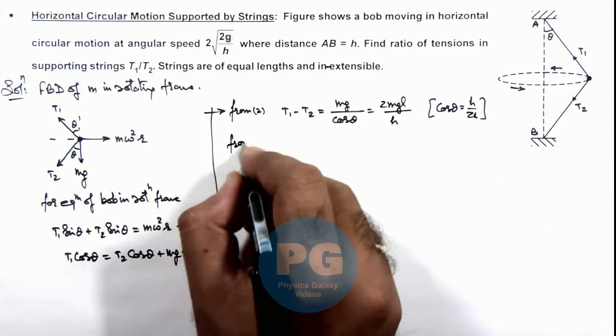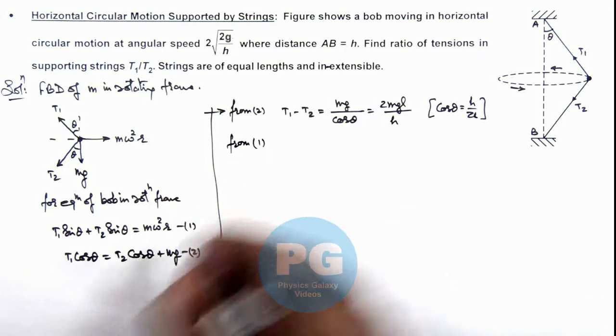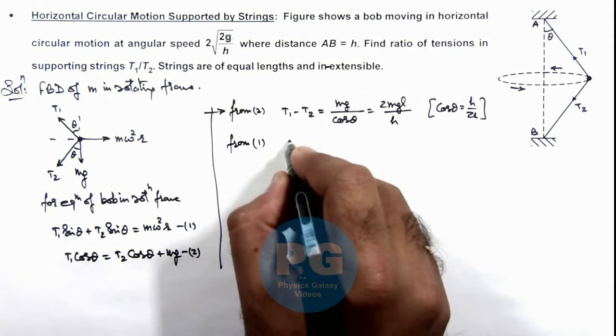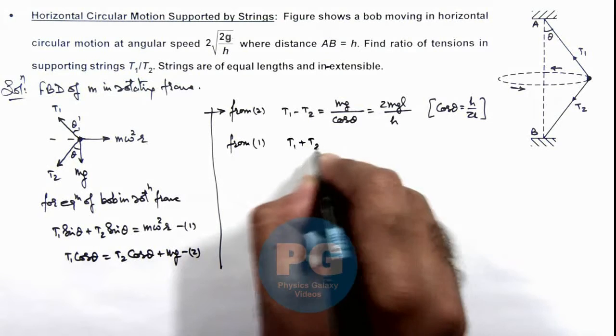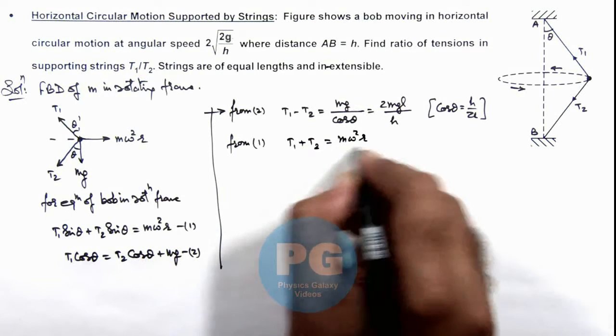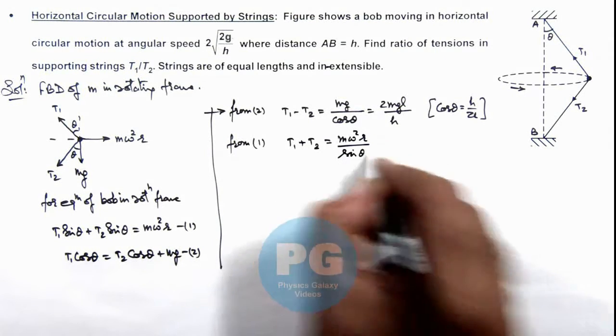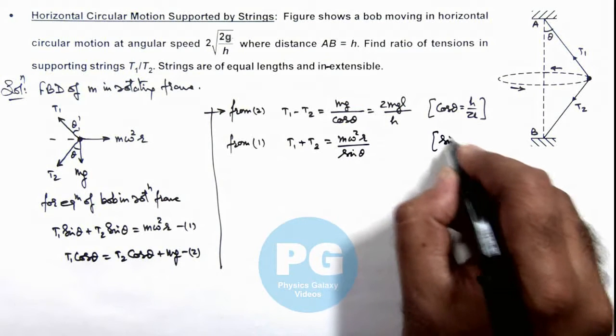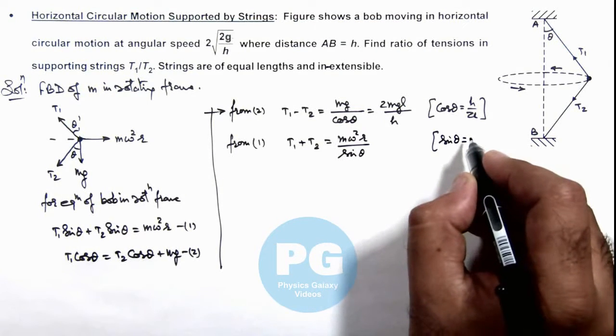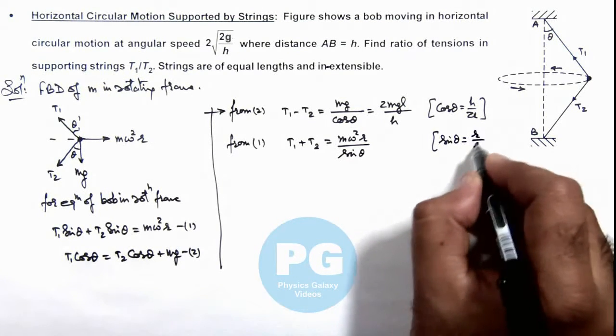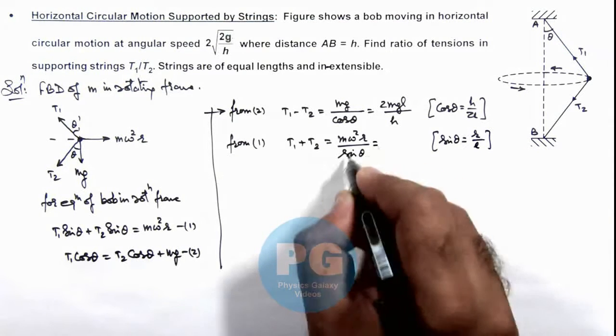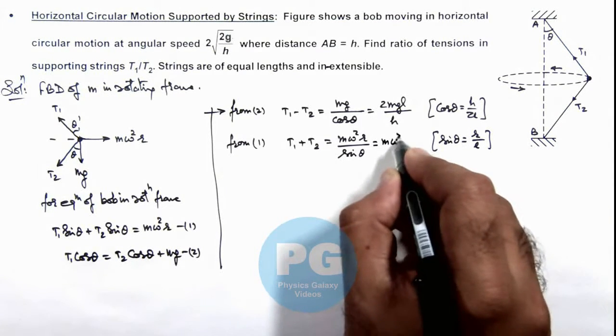Similarly from equation 1, we can write: T₁ + T₂ = mω²r/sinθ. And as here the value of sinθ = r/l, then on substituting r/l, it is mω²l.